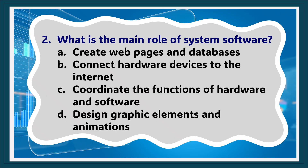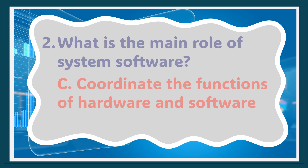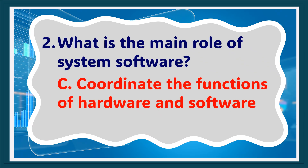Question 2: What is the main role of system software? A. Create web pages and databases, B. Connect hardware devices to the internet, C. Coordinate the functions of hardware and software, D. Design graphic elements and animations. The answer is C. Coordinate the functions of hardware and software.